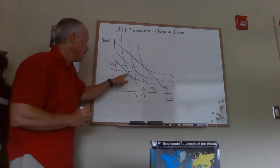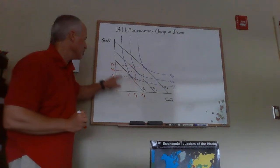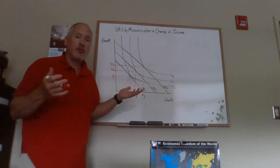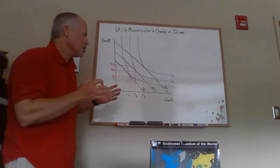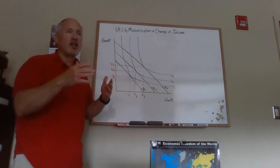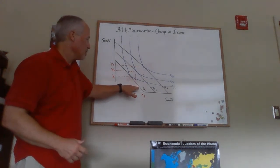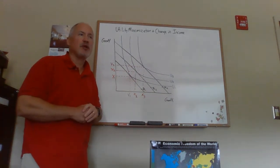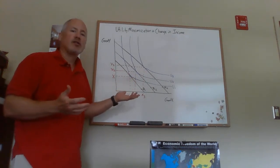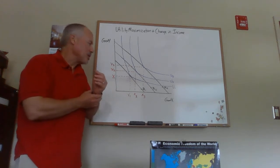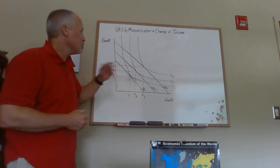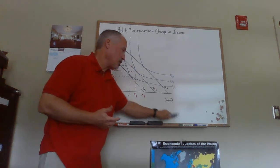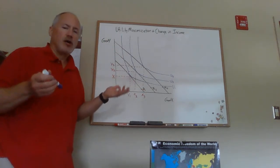We have three tangency points that give us quantities x1 and y1, x2 and y2, x3 and y3. As income goes up, the consumer is able to attain a higher level of utility. We can think of this as a person over time — first as a college student with a very limited budget, then after graduating and getting a real job, then after a raise and promotion. Hypothetically, if prices of x and y didn't change, this would show how the consumer changes behavior as income rises.